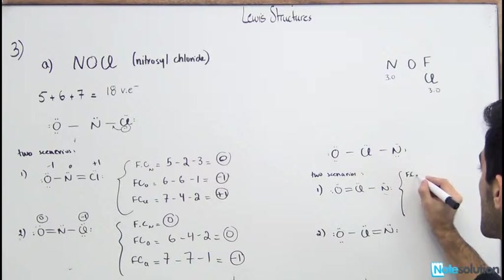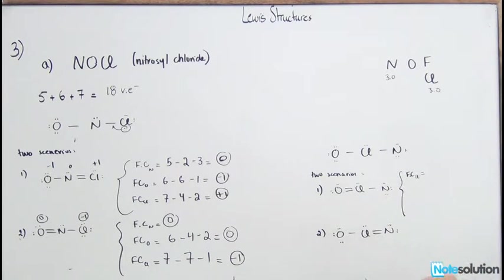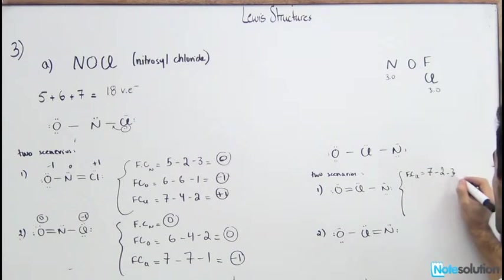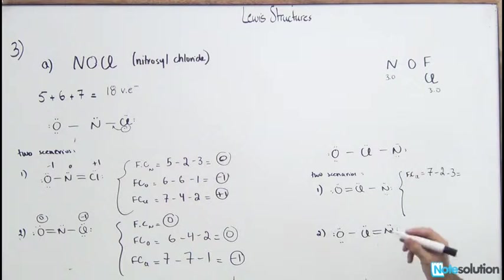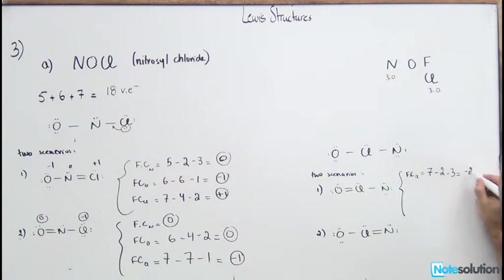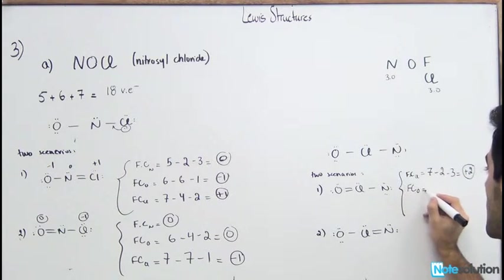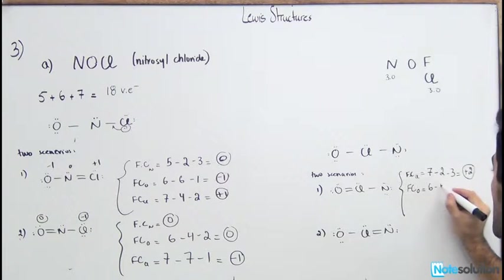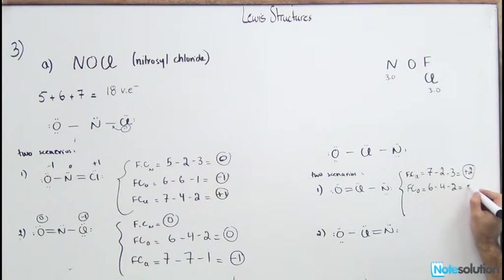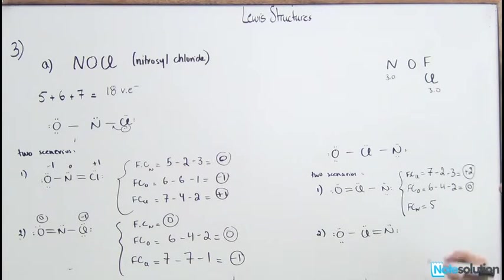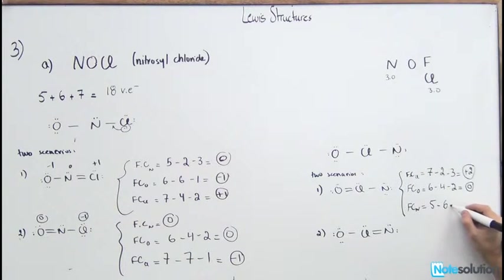With Cl in the middle, scenario one: FC of Cl = 7 − 2 − 3 = +2. FC of O = 6 − 4 − 2 = 0. FC of N = 5 − 6 − 1 = −2. These are very large formal charges.